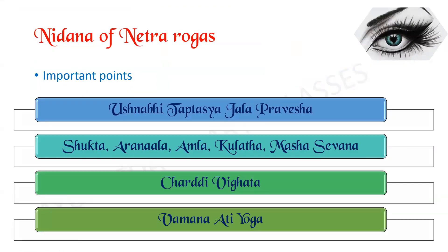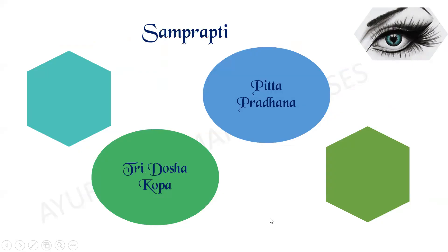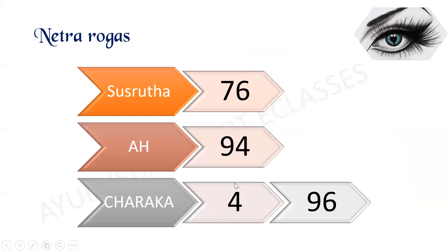Regarding the Nidana of Netraroga, some important points are: Ushnabhi Taptasya Jala Pravesha, Shukta, Aranala, Amla, Kulattha-Masha Sevana, Chardivighata, and Vamana Adhi Yoga. Samprapti is mainly Pitta Pradhana and Tridoshakopa.